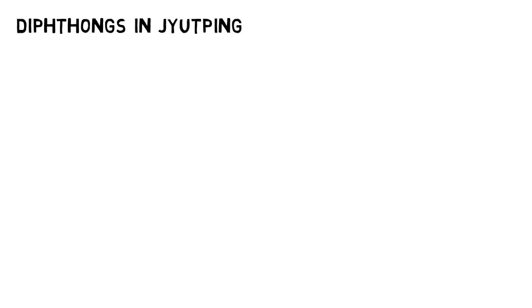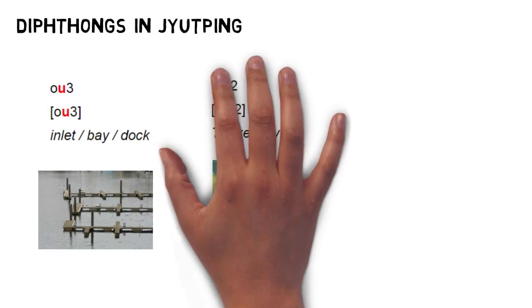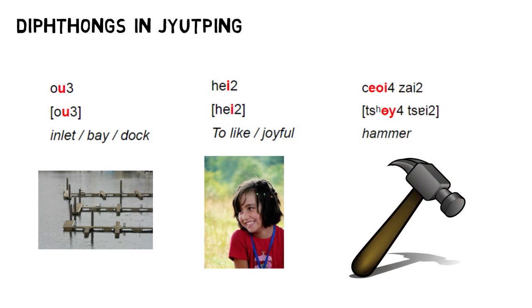And so with that, we're actually done with the whole Cantonese spelling system. To review: we began by talking about the spelling of diphthongs in Jyutping. Basically, to make a diphthong ending in U, you add the letter U, making diphthongs like 哦. To make a diphthong ending in I, you add the letter I, making diphthongs like 嘿. The only ending you really need to memorize is E-O-I, which forms the diphthong as in 腿仔.